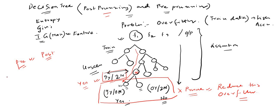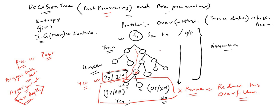For bigger datasets, you will obviously go for pre-pruning, and for that you have to do hyper parameter tuning. There is a parameter called max depth, and you can control it — for example if you consider level zero, one, two, three, and four, you can say max depth equal to three and not continue till four. That is how you control the tree depth.